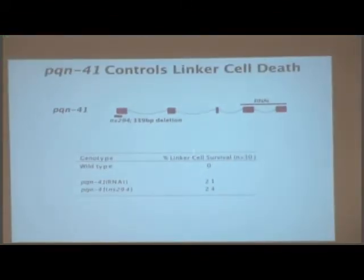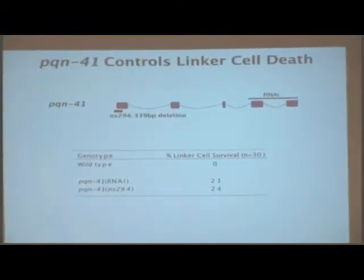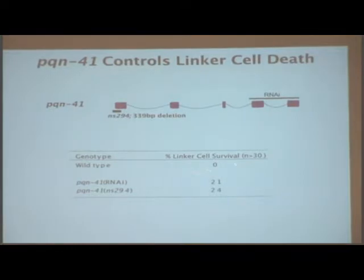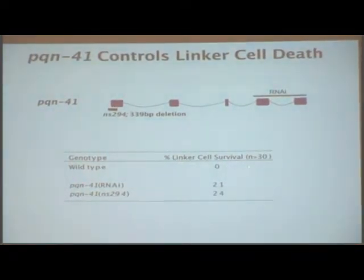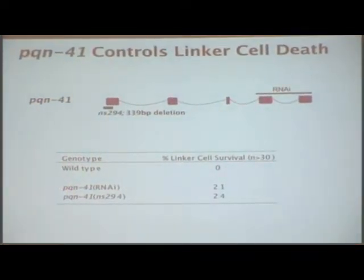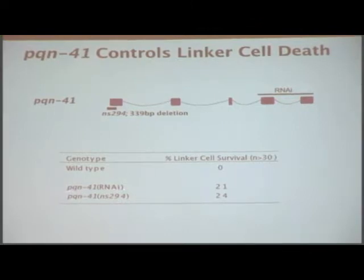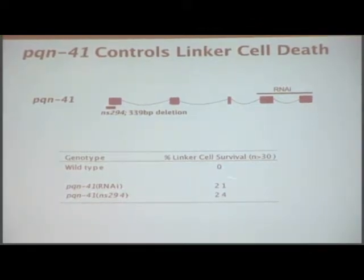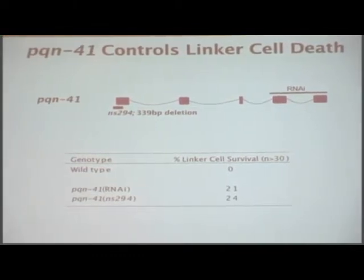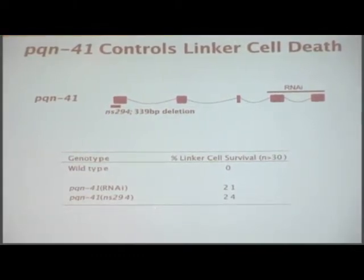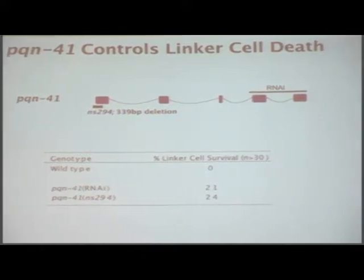PQN-41, as you can see — this is wild type, so if you're wild type all the linker cells die and there is no surviving linker cell. When PQN-41 is knocked down by RNAi, I get about 20% linker cell survival. In another way of perturbing PQN-41 function using a genetic mutation, we have a similar phenotype — about 20% of linker cells survive inappropriately.